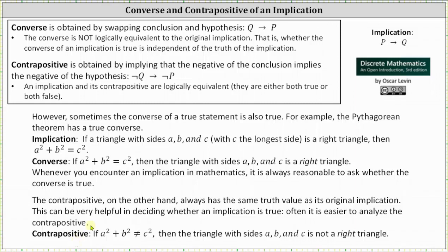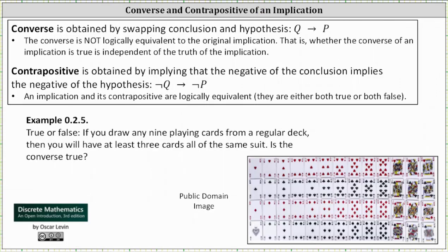Let's take a look at one more example. We want to determine whether the given implication is true or false as well as its converse. And the implication is if you draw any nine playing cards from a regular deck then you will have at least three cards all of the same suit. I've included a picture of a deck of cards below to help analyze the implication.